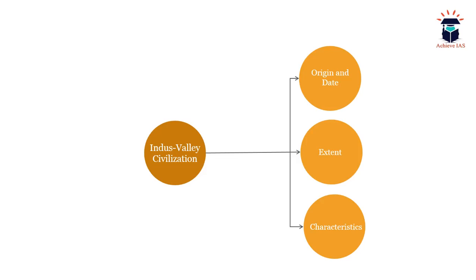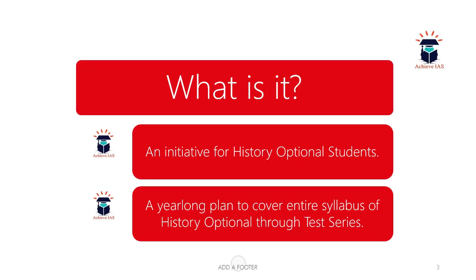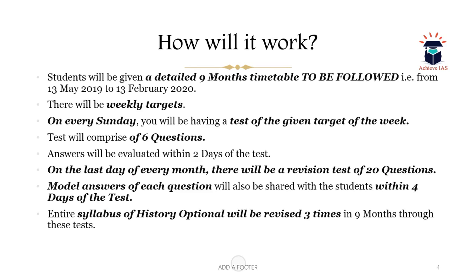For students seeing this video for the first time, let me explain what this initiative is all about. It is an initiative for history optional students — a year-long plan to cover the entire syllabus of the history optional through a test series. More precisely, it is a nine-month timetable starting from 13 May 2019.